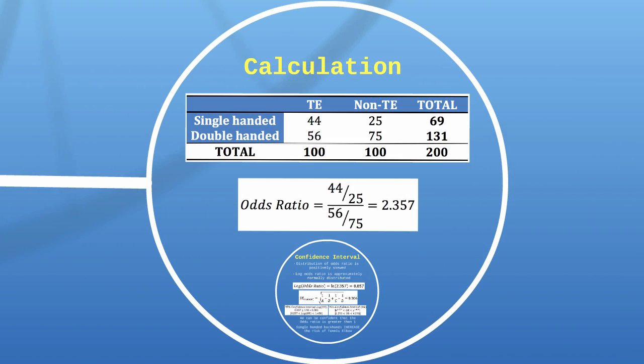Let's actually calculate it. Here we've gone 44 divided by 25 to get the odds for single-handed players, and divided that by the odds for double-handed players, and we get 2.357. So that's our estimate for the odds ratio based on this sample. Now, hopefully, you're thinking at this point that we need some kind of confidence interval around this odds ratio, because it is a sample. And whenever we're sampling, there's obviously some variation about it.